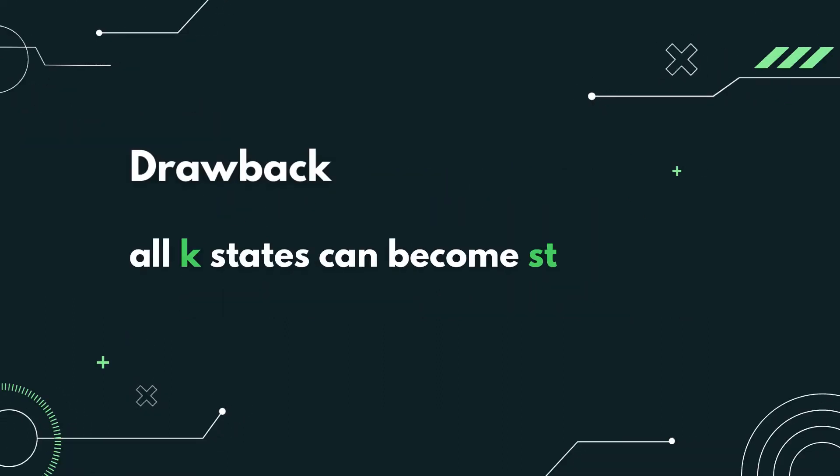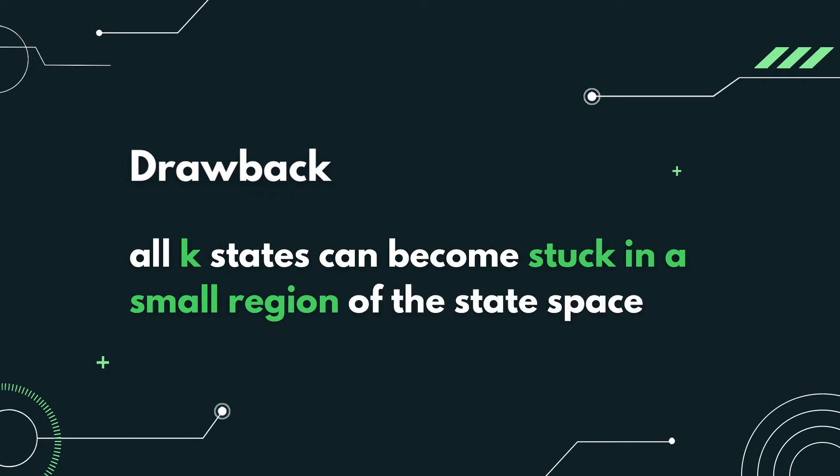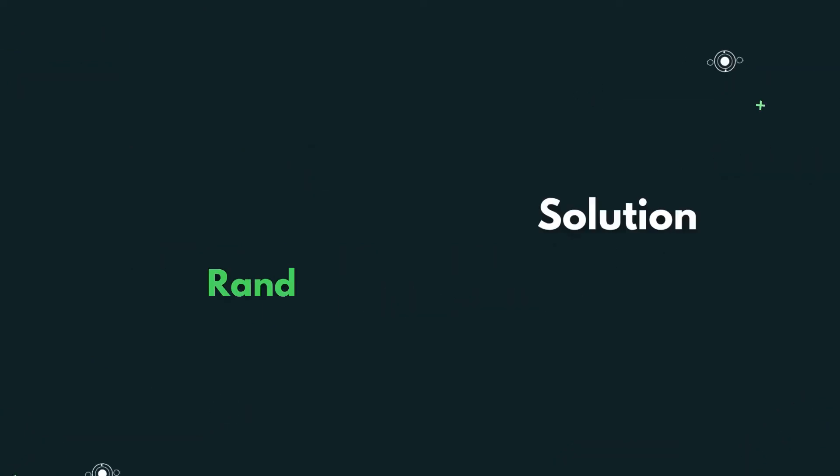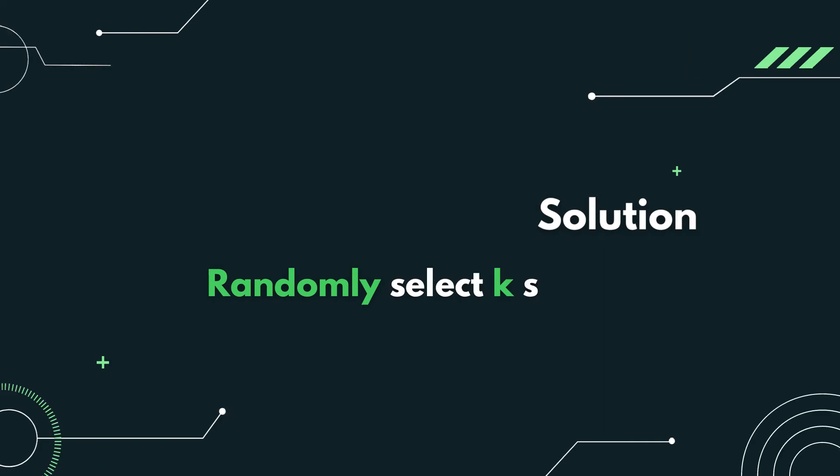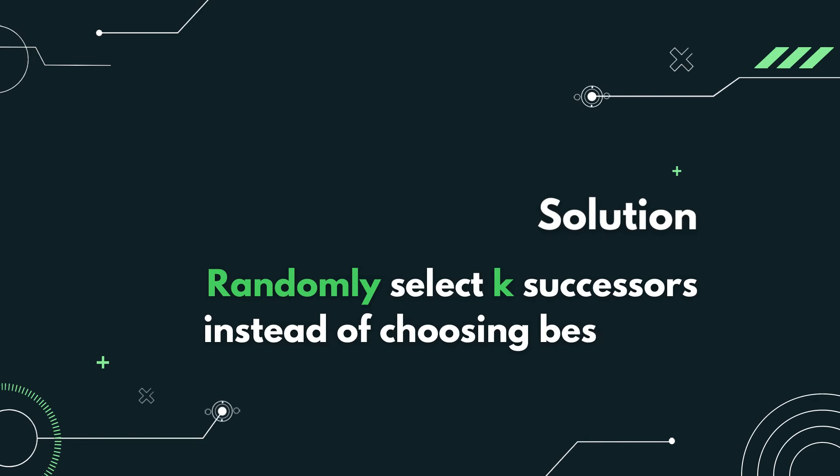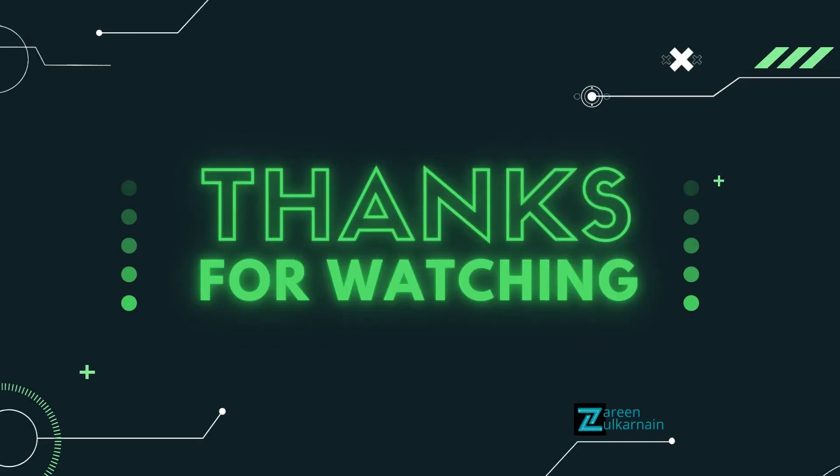The drawback is that all K states can become stuck in a small region of the state space. To solve this, we can randomly select K successors instead of choosing best ones. But, that's a discussion for another day. Thanks for watching.